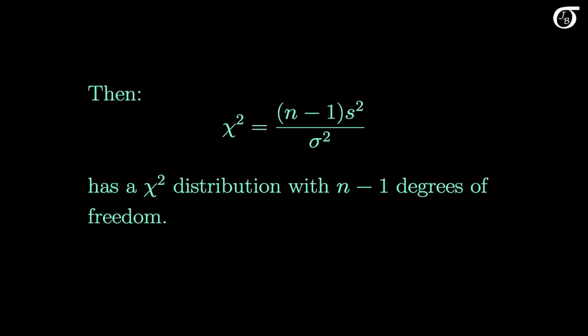If we are sampling from a normally distributed population, then the quantity n-1 times s-squared over sigma-squared has the chi-squared distribution with n-1 degrees of freedom. So the derivation of the appropriate confidence interval for sigma-squared will involve the chi-square distribution.